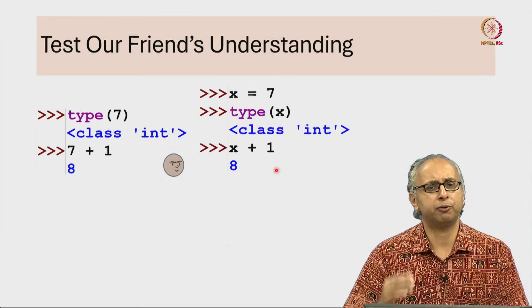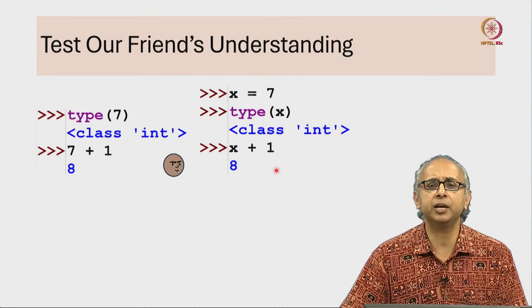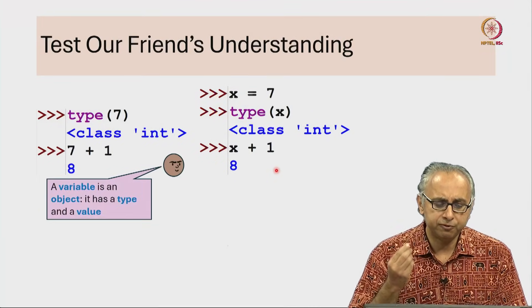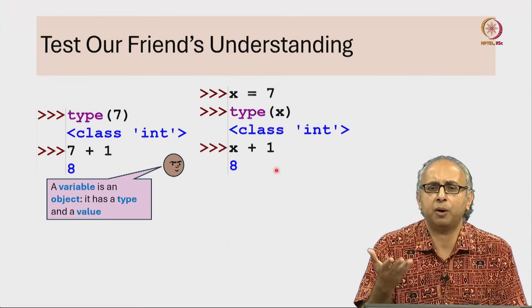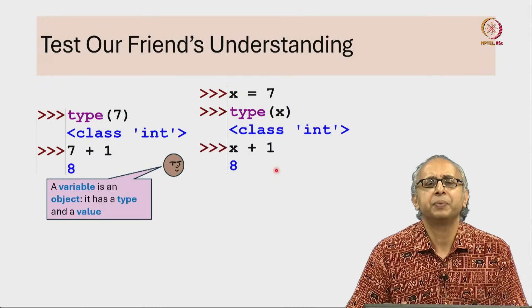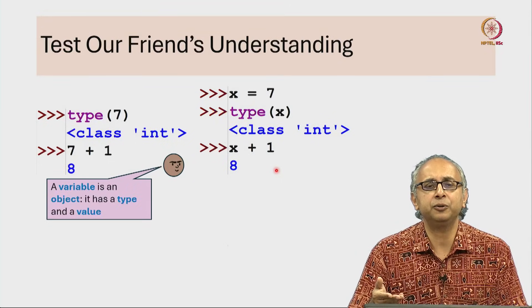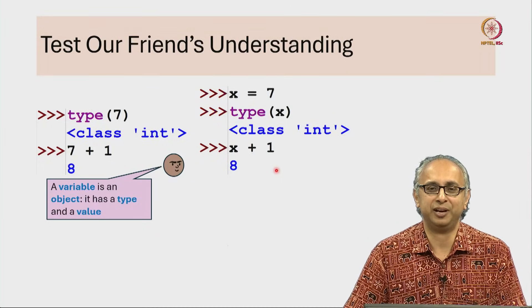So here is what our friend starts thinking. When they are looking at this code they say, you know what, a variable is basically an object. Just like an object has a type, a variable has a type. And just like an object has a value, a variable has a value.